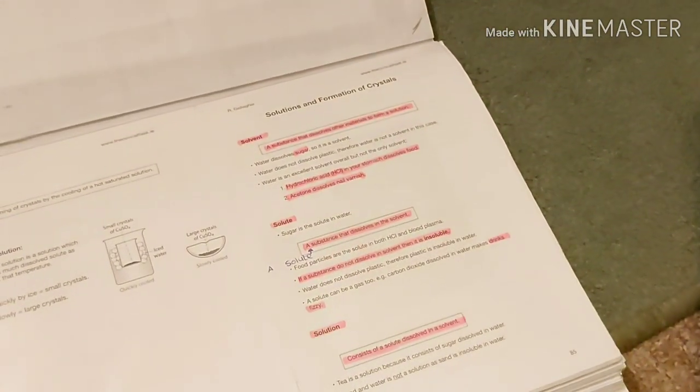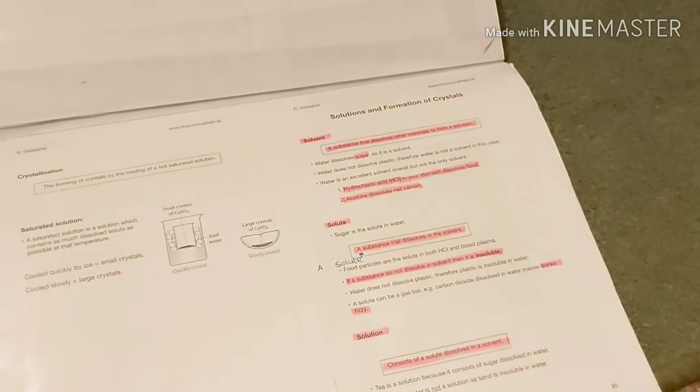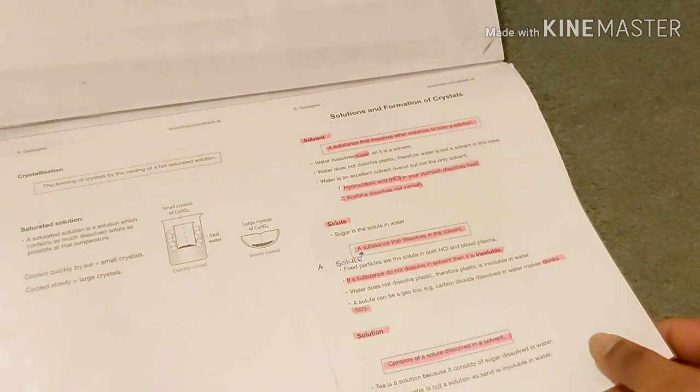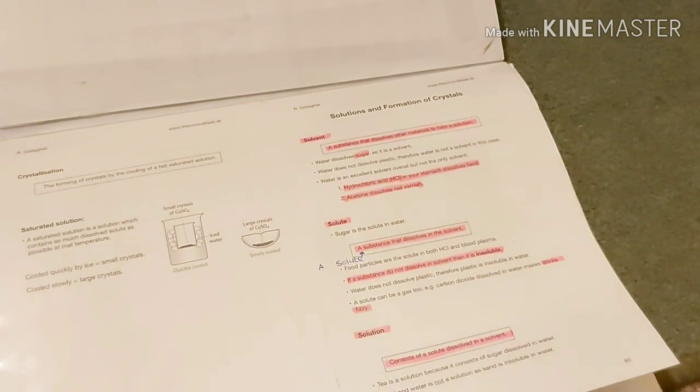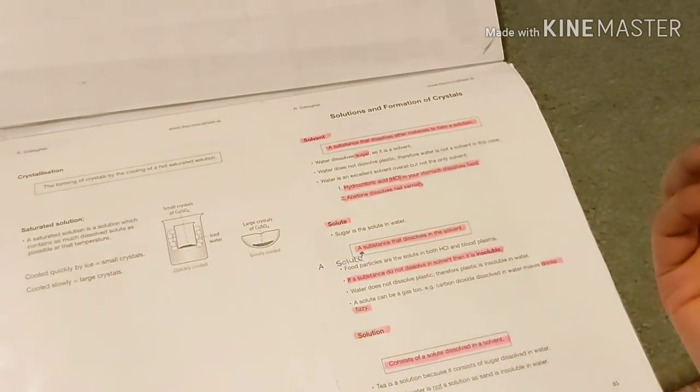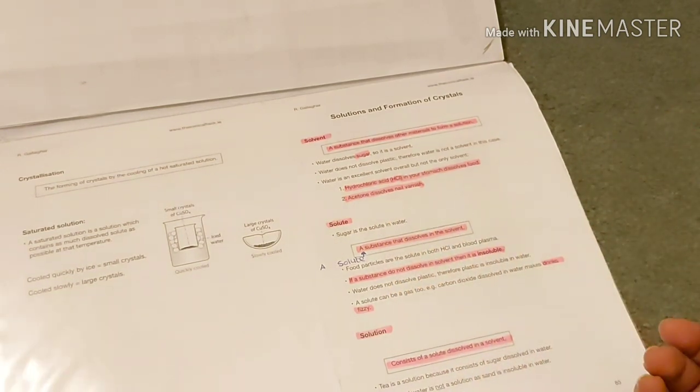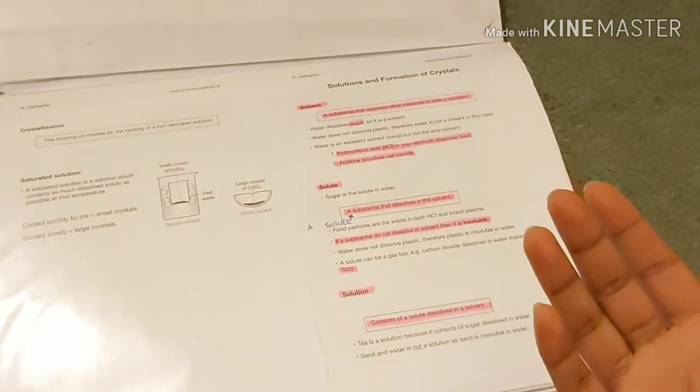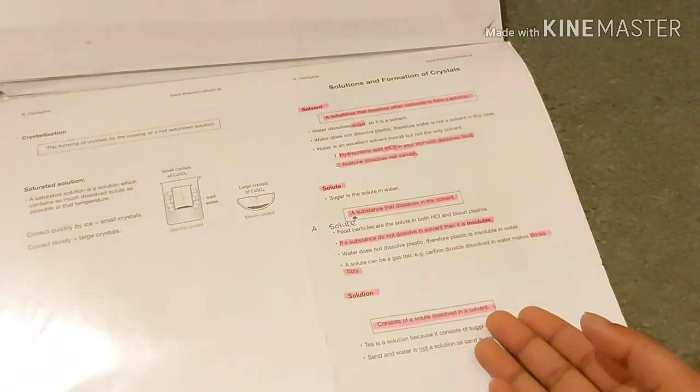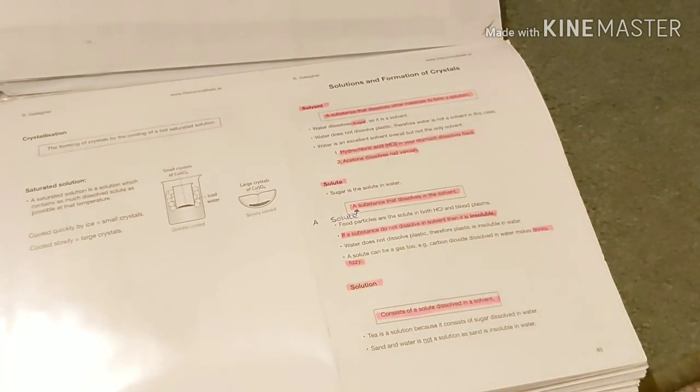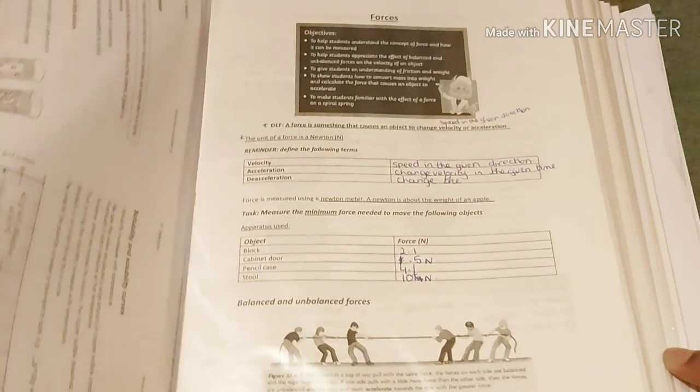Now we're going to go through solutions and formation of crystals. For example, solvent and solute and the final is solution. Take an example of coffee, how to make coffee. First you need coffee powder obviously, then you need sugar and water. If you mix the three ingredients together you have your final solution.